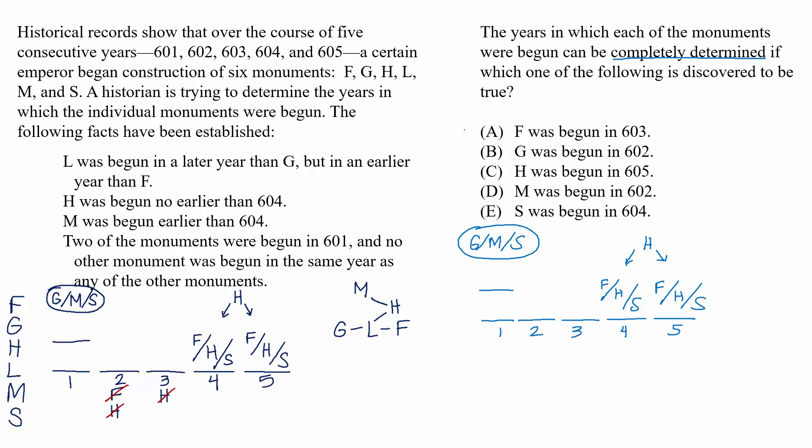Let's try A. F was begun in 603. In this case, we do know that G is in 601 and L is in 602 because G is before L and L is before F. But we don't know which of the other monuments is in 601 with G. It could be M or S, so we can move on.